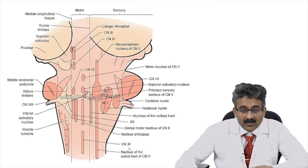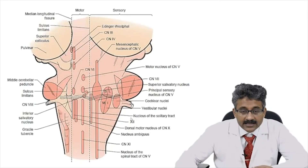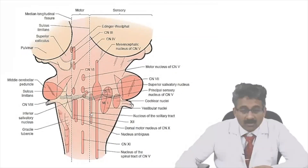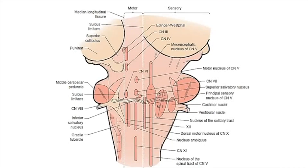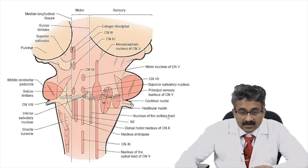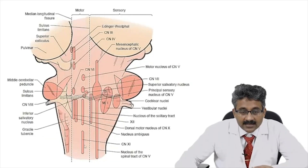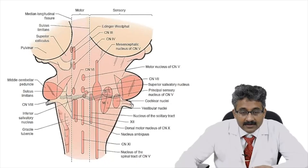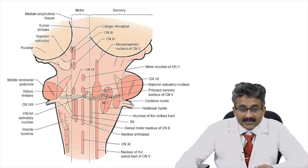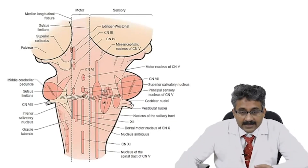Now coming to the medulla: see here the nucleus of the solitary tract, which contains sensation to the posterior one-third of the tongue via the glossopharyngeal nerve — this is the ninth cranial nerve nucleus. Then you have the dorsal motor nucleus of the tenth. Then the eleventh cranial nucleus — the spinal nucleus of the spinal accessory nerve. Then the twelfth cranial nucleus — see here, the twelfth. So the ninth, tenth, eleventh, and twelfth are in the medulla.